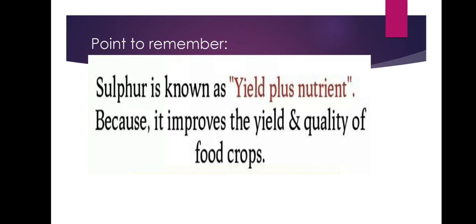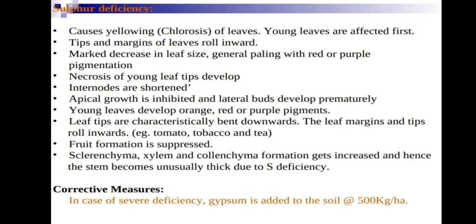Sulfur deficiency causes yellowing and chlorosis of leaves. Tips and margins roll inward, and leaf size decreases. General peeling with red or purple anthocyanin pigmentation also occurs. Necrosis of leaf tips occurs, and internodes become shorter while apical growth is inhibited and lateral buds develop prematurely. Young leaves develop orange-red or purple pigments, and leaf tips bend downwards while margins and tips roll inward — visible in tomato, tobacco, and tea.